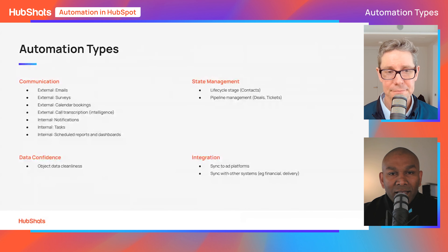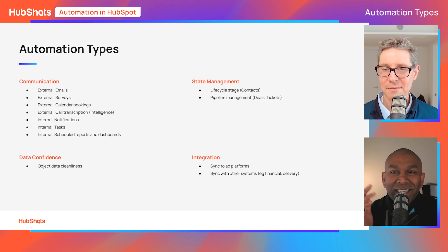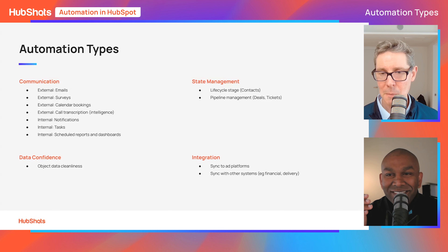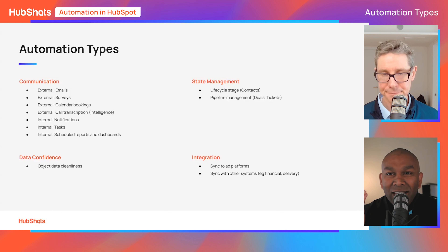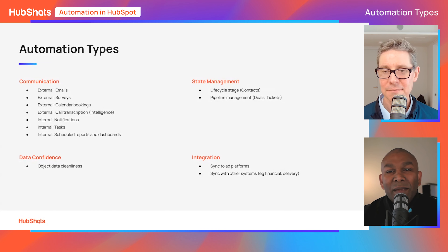Integration is also a big part, though we won't touch on it too much today. A really simple example: when a person reaches a particular life cycle stage in HubSpot, if your data is connected, you can automatically send the contact details into Xero so that accounts can invoice them — saving a process step and getting invoices out quicker. You can even invoice directly out of HubSpot with the right integrations, so accounts don't have to touch it at all.